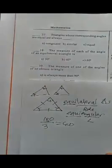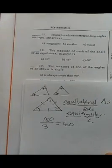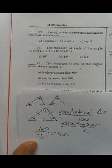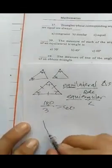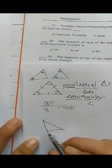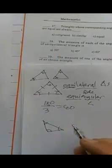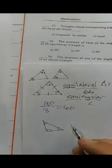The measure of one of the angles of an obtuse triangle is always less than 90 degrees — that means acute. In an obtuse triangle, the two other angles are always acute, or less than 90 degrees. The answer is letter C.